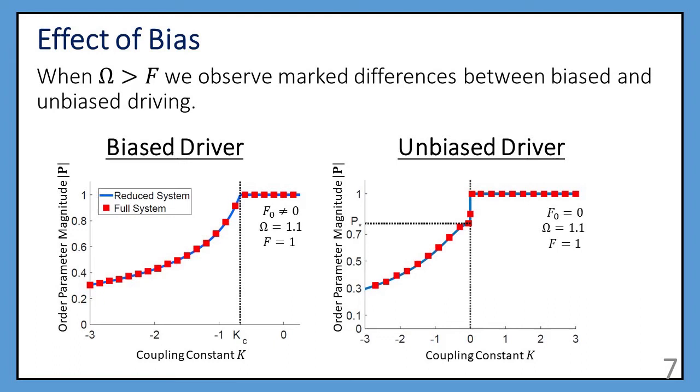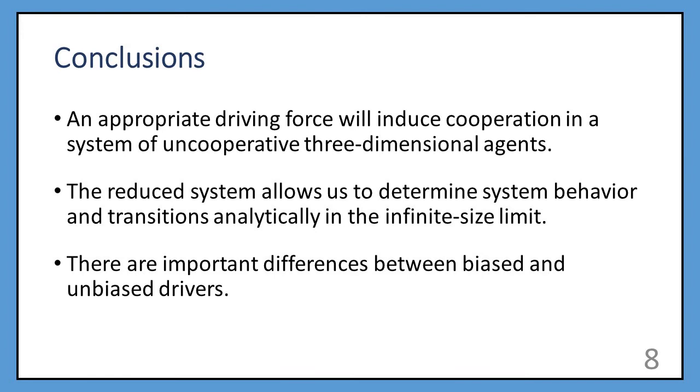However, unbiased drivers, if they're rotating too quickly, aren't always going to be able to unify agents that repel each other. As you can see, this discontinuous transition on the graph to the right, occurring at a value of zero, shows that agents that repel each other will always have some spread over the sphere instead of coming together fully.